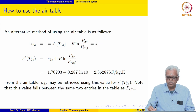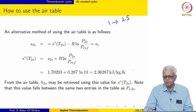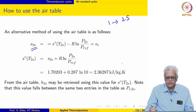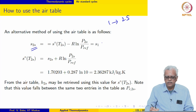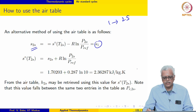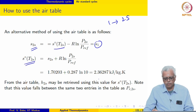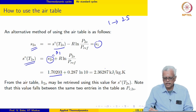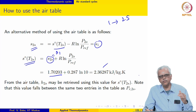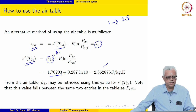For a process 1 to 2s, I can write the entropy at state 2s as S0(T2s) minus R times the natural log of P2s over P_ref, from the definition of specific entropy. This equals S1 because we are saying 1 to 2s is an isentropic process. Therefore, I can write S0(T2s) equals S2s plus R times the natural log of P2s over P_ref. S2s equals S1, so the value is known. We looked up the value from the table: 1.70203. So we can actually evaluate S0(T2s) using this expression.